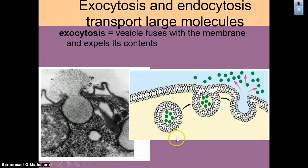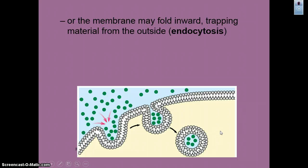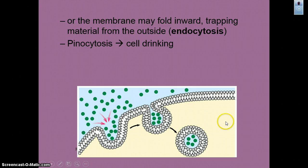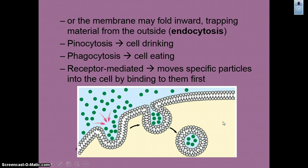Endocytosis and exocytosis: sometimes substances are too large to pass through the membrane normally. Exocytosis moves material out — a vesicle fuses with the double lipid bilayer membrane and releases contents outside the cell. Endocytosis folds the membrane inward to bring large or numerous particles into the cell. If it takes in liquid, it's called pinocytosis; if it takes in solids, it's called phagocytosis. Receptor-mediated endocytosis is when specific particles bind to the cell first before being taken in.